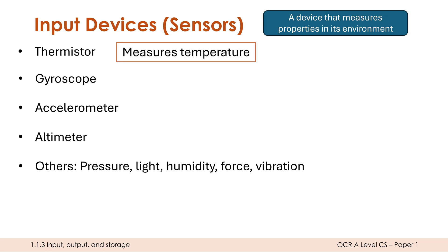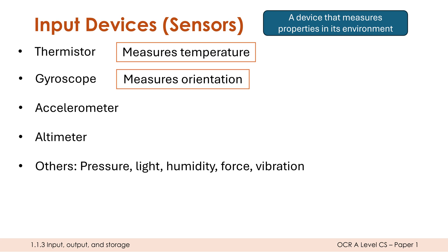A thermistor is a heat sensor — it measures temperature. Mark schemes don't like you to say 'thermometer' because a thermometer doesn't actually provide data to a computer, so say thermistor or heat sensor. This could be used in a kettle, a jacuzzi, or an air conditioning unit. A gyroscope measures orientation — for example, in a smartphone to detect landscape or portrait mode so the screen can adjust itself.